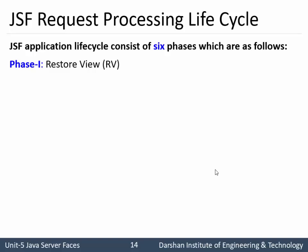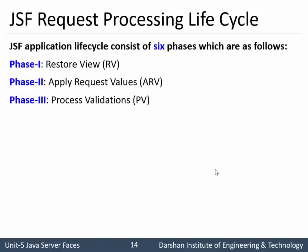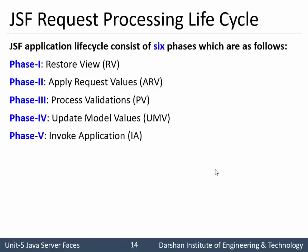Phase 1 is Restore View. Phase 2 is Apply Request Value, also known as ARV. Phase 3 is Process Validation. Phase 4 is Update Model Values. Phase 5 is Invoke Application. Phase 6 is Render Response. When a client sends a request to a JSF component, it initializes with Phase 1 - Restore View - and while updating the component tree, it reaches Phase 6 which sends the response back to the client.